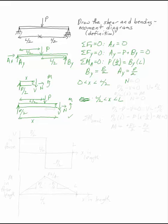N equals 0 in both cases because I don't have an axial force. Here I have P over 2 minus V equals 0, so V is equal to P over 2. Down here I have P over 2 minus P minus V equals 0, so V is equal to minus P over 2. At the top,